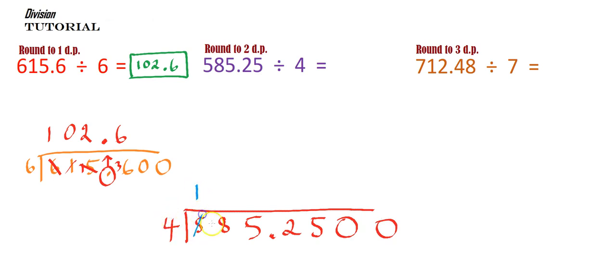4 into 5 goes once with 1 left over. 4 into 18 goes 4 with 2 left over. 4 into 25 goes 6 times with 1 left over. I'm up to the decimal point, so let's put the decimal point in. 4 into 12, that's 3 times.